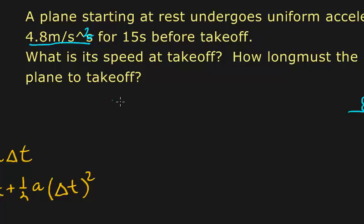So let's list what we have there. We have vi equal to 0 meters per second. We have delta t, our change in time, as 15 seconds. We have acceleration equal to 4.8 meters per second squared, which is exactly the unit we need that in.